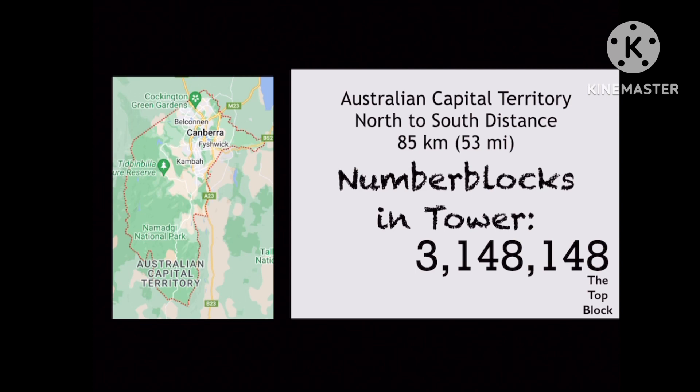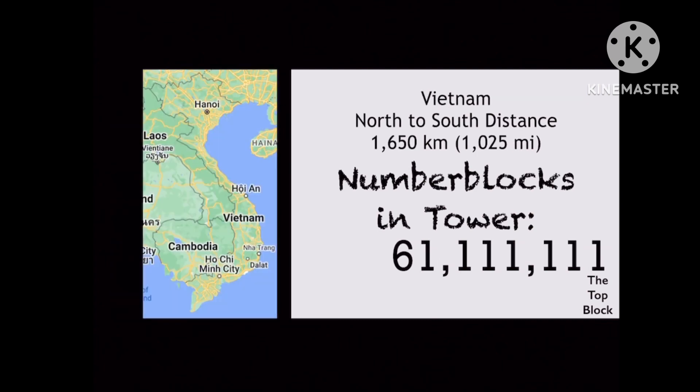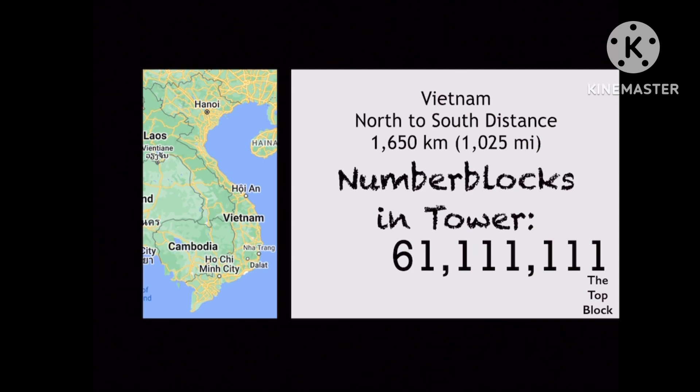The north to south distance of the Australian Capital Territory is over 3 million number blocks. The length of Togo is close to 21.5 million number blocks. Vietnam's north to south distance is around 61.1 million number blocks. Brazil has the longest distance from north to south of any country at over 161 million number blocks.